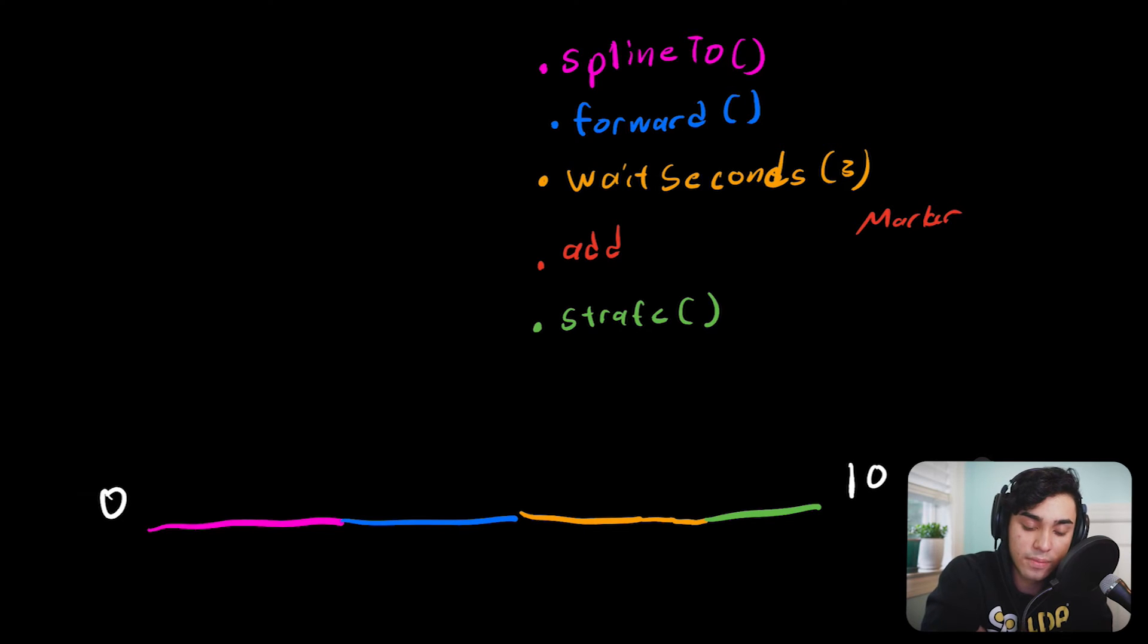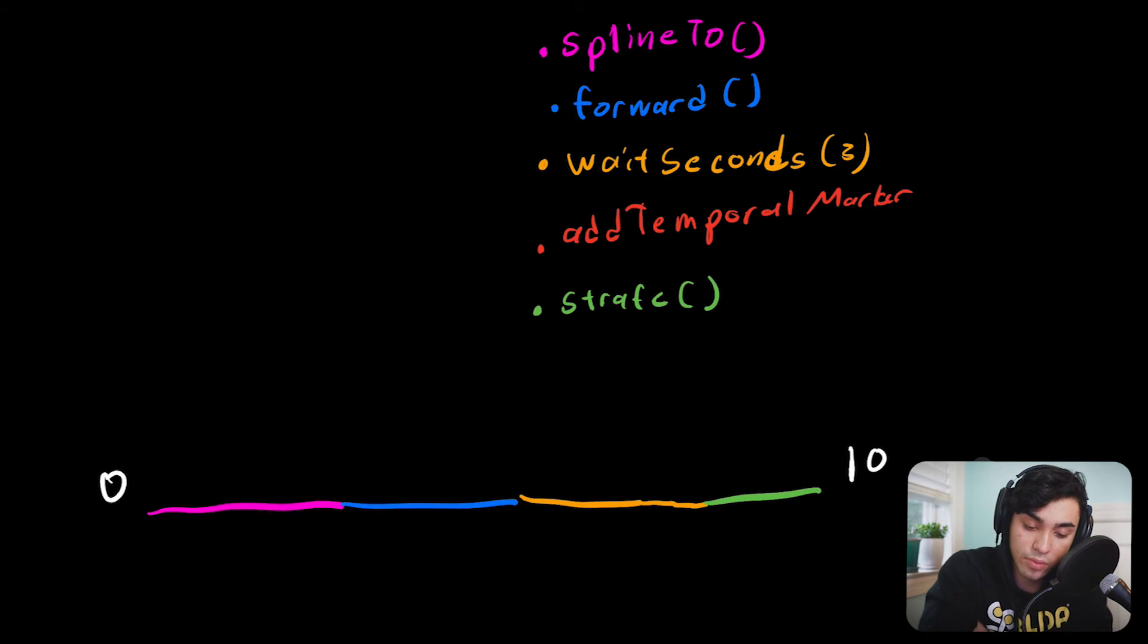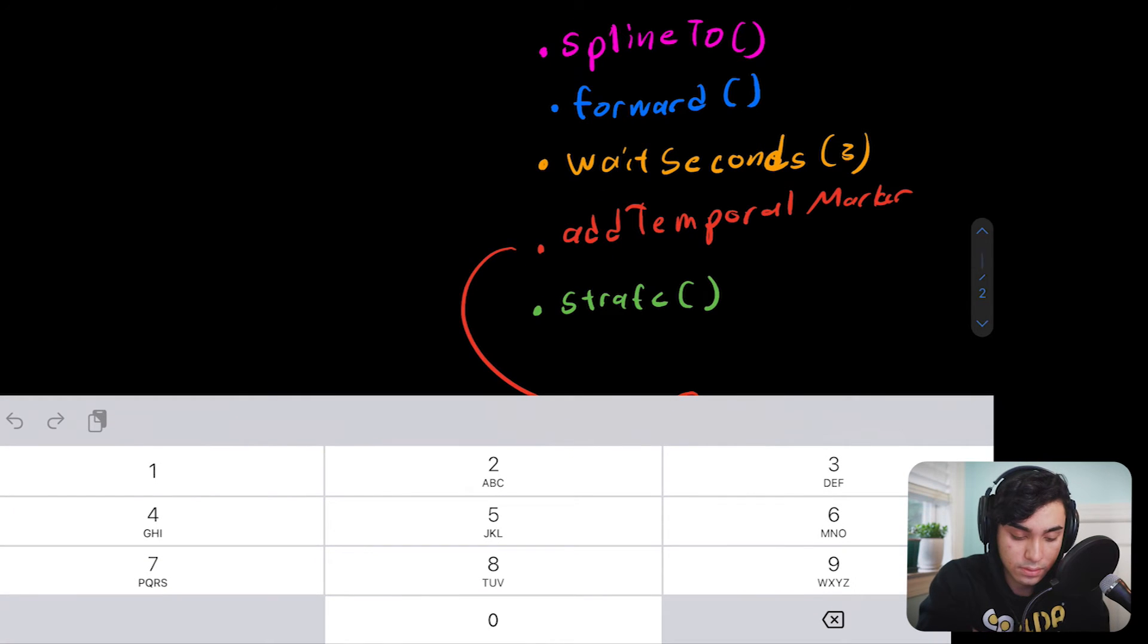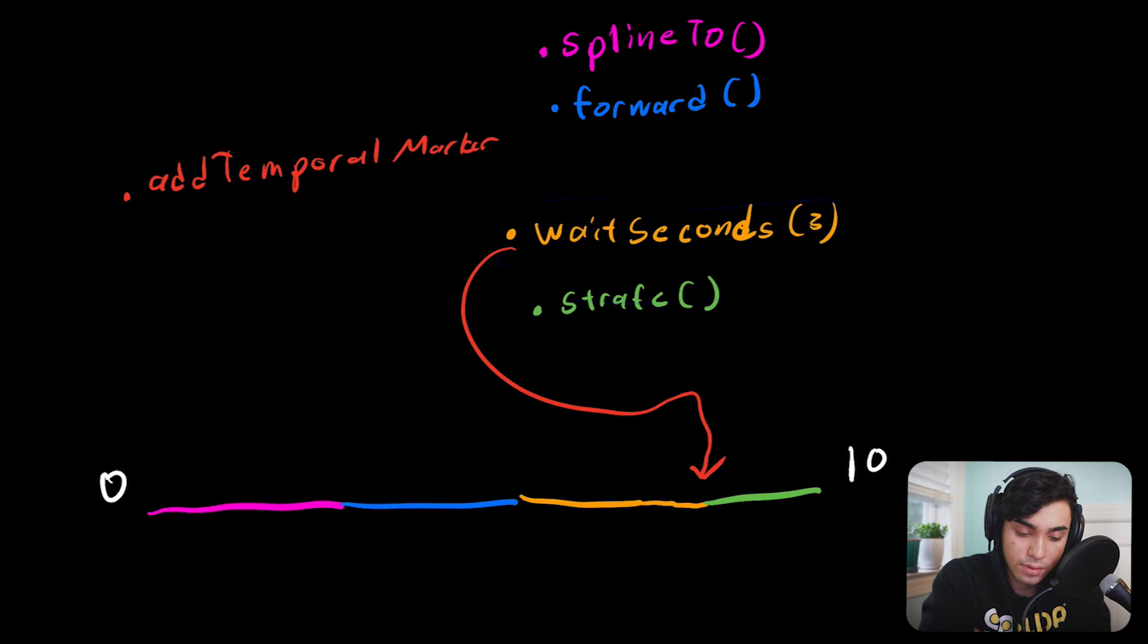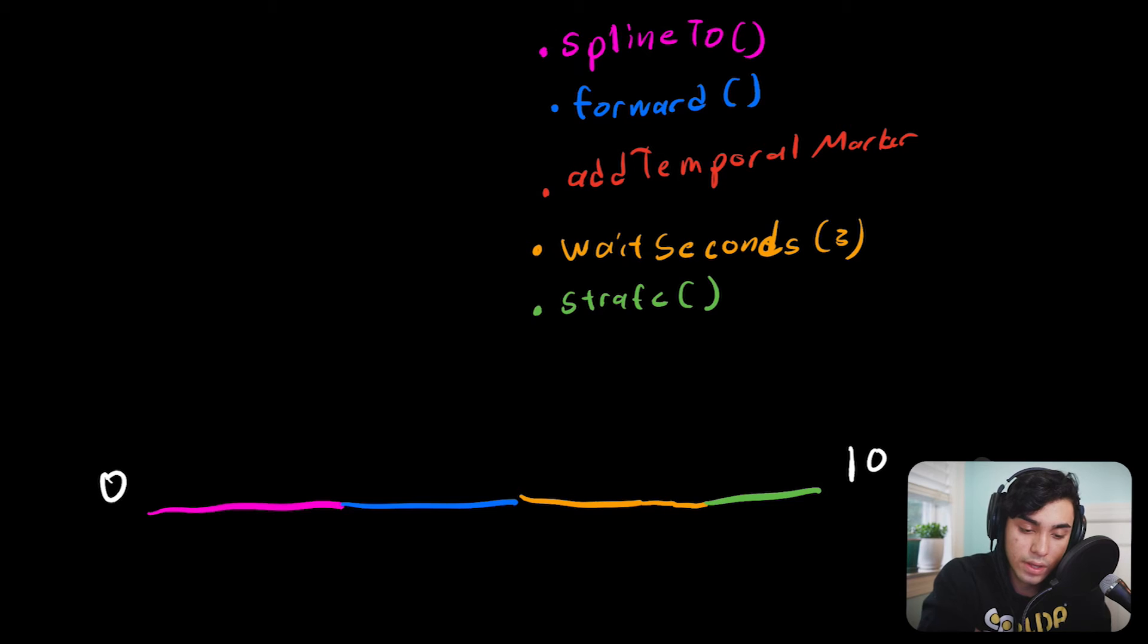We replace it with a temporal marker. And so, because time is constantly increasing during this entire trajectory, it will work. So this adds a marker right there between the wait seconds and the strafe. And if we move the marker before the wait seconds, it will now go where we expect right there between the forward and the wait seconds. So yeah, always use temporal markers with trajectory sequences.